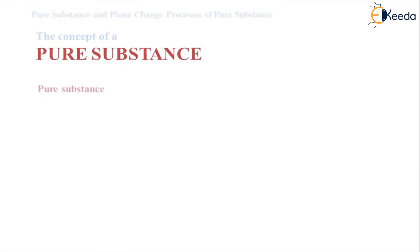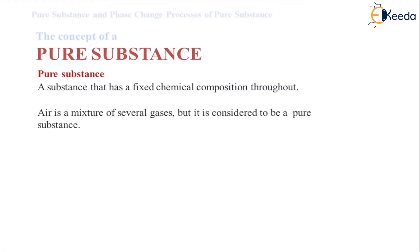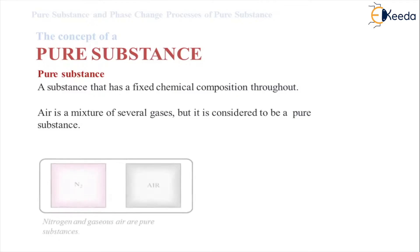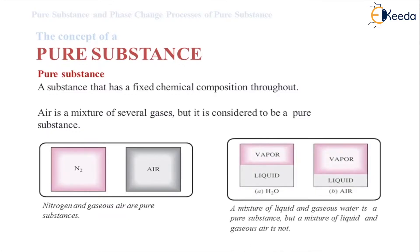What is a pure substance? Pure substances are those that have a fixed chemical composition throughout. No matter the phase, whether miscible or not, the chemical composition should be the same throughout — it should be homogeneous — only then can we say the given substance is a pure substance. Air is a mixture of several gases but is considered a pure substance. A mixture of liquid and gaseous water is a pure substance, but a mixture of liquid and gaseous air is not.